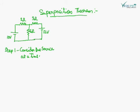Step 1 is to consider one source at a time. We will select any one of them — that means the 10V source. The equivalent circuit will have the voltage, a 2 Ohm resistance, a 6 Ohm resistance, another 6 Ohm, a 2 Ohm, and a 3 Ohm. There will be a short circuit — we will short circuit the 12V supply. The condition is: if an ideal voltage source is replaced, it becomes a short circuit.